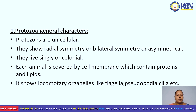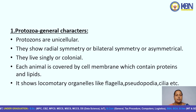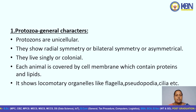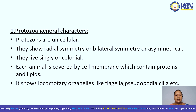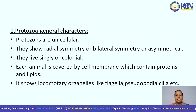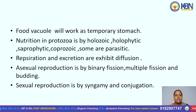In protozoa general characters, protozoans are unicellular. They show radial symmetry, bilateral symmetry, or are asymmetrical. They live singly or in colonies. Each animal is covered by a cell membrane which contains protein and lipids. It shows locomotory organelles like flagella, pseudopodia, cilia, etc. Food vacuole will work as a temporary stomach.